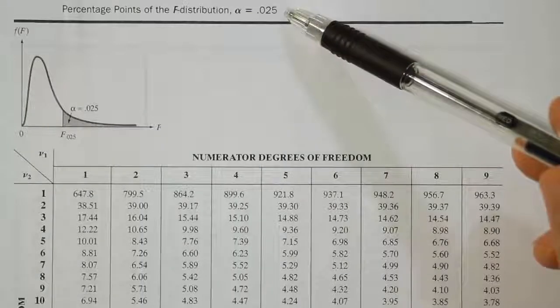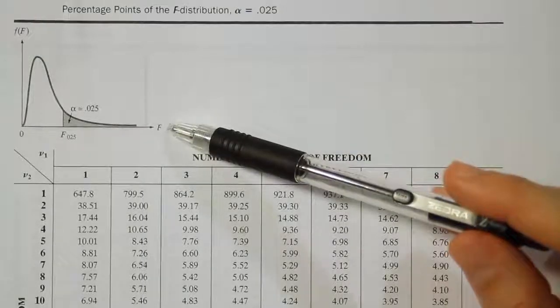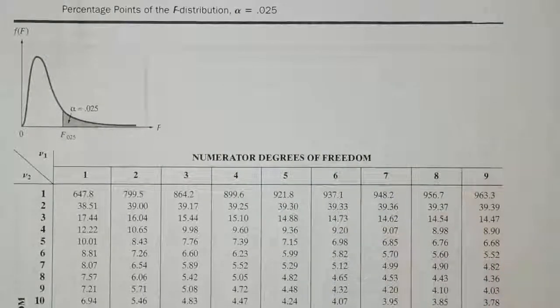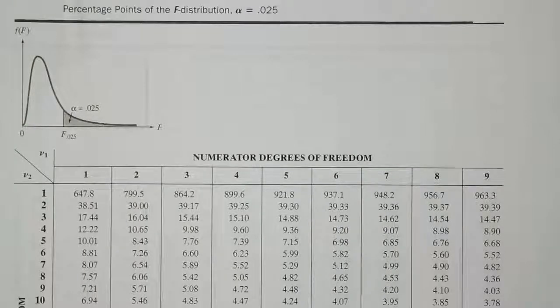Okay, so I'm on the 0.025 F table and I want to find numerator degrees of freedom 45. I don't see that here though, so I'm going to go to my next page and try to find it there.